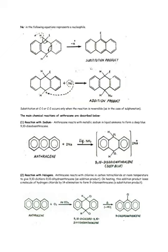The main chemical reactions of anthracene are described below. First, reaction with sodium: anthracene reacts with metallic sodium in liquid ammonia to form a deep blue 9,10-disodioanthracene. Reaction with halogens: anthracene reacts with chlorine in carbon tetrachloride at room temperature to give 9,10-dichloro-9,10-dihydroanthracene, an addition product. On heating, this addition product loses a molecule of hydrogen chloride by elimination to form 9-chloroanthracene, a substitution product.